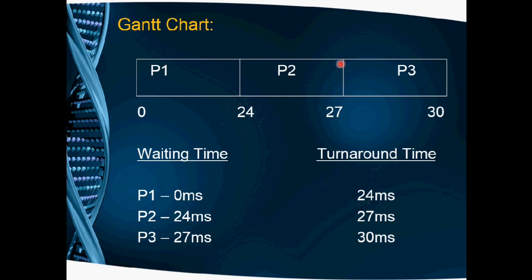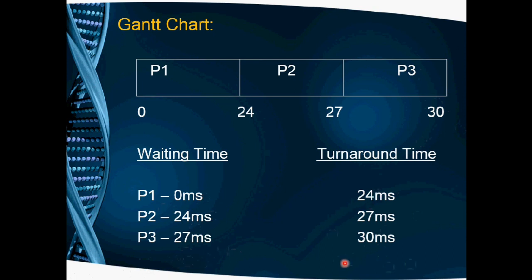For P2, the starting time is 24, so 24 is the waiting time for P2. The ending time is 27, so 27 is the turnaround time for P2. For P3, the starting time is 27, so 27 is the waiting time. The turnaround time for P3 is 30. Sometimes questions ask for the average, so you need to average these values for average waiting time and average turnaround time. That completes the FCFS scheduling example.